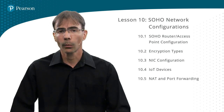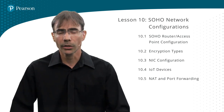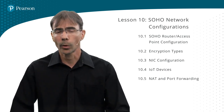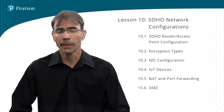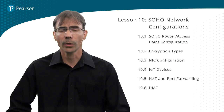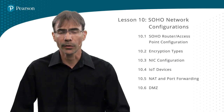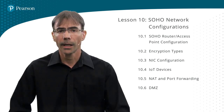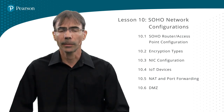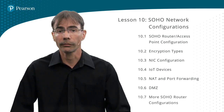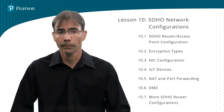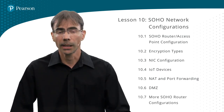Then we'll cover network address translation and port forwarding, and then we'll get into screened subnets, otherwise known as demilitarized zones, or DMZs, and finally some additional SOHO router configurations. Let's begin now.